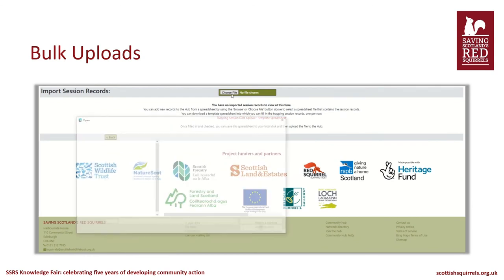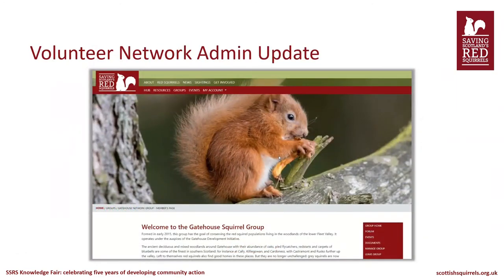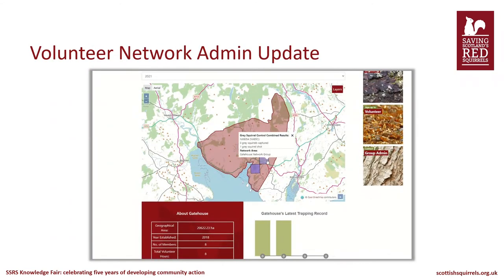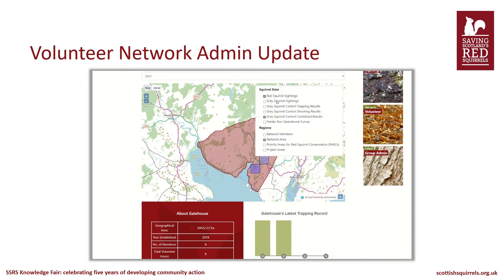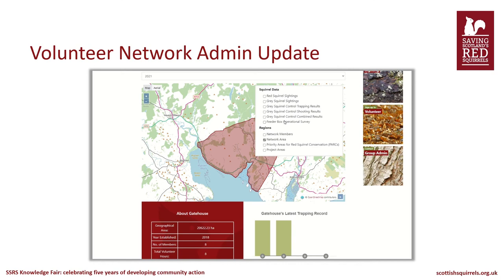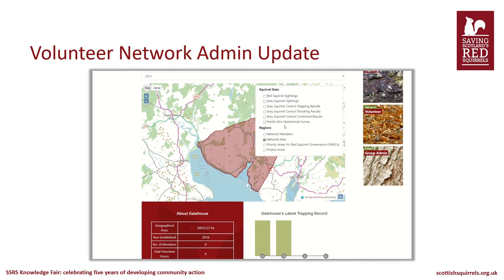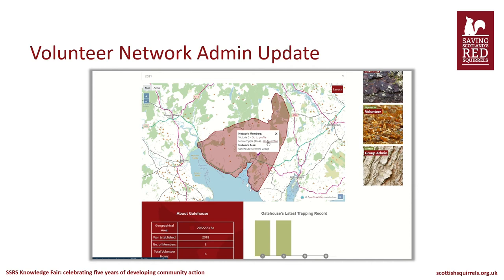We've added the export data to Excel button to the feeder box page, allowing all members of the feeder box survey group to export their survey data, with admins being able to export for their whole group. We've also increased data access for admins so that when they log on they can see results of their group's feeder box surveys, as well as a layer showing where group members are based, so that admins can easily deploy the closest person to an area of activity concern or interest — providing an effective management tool for the group's conservation efforts.